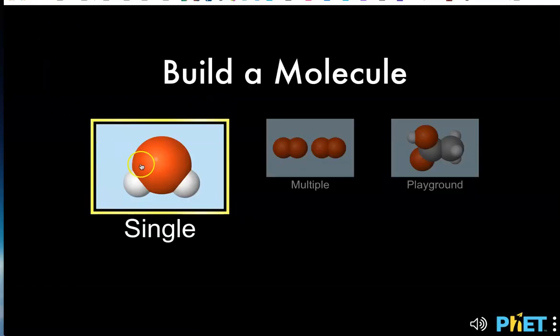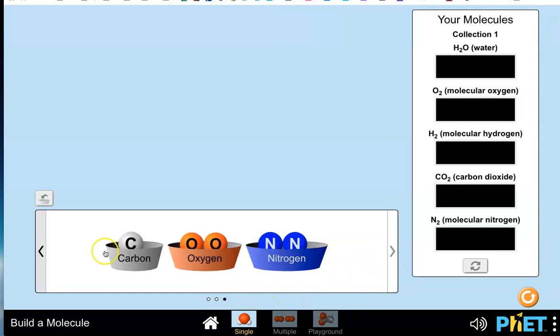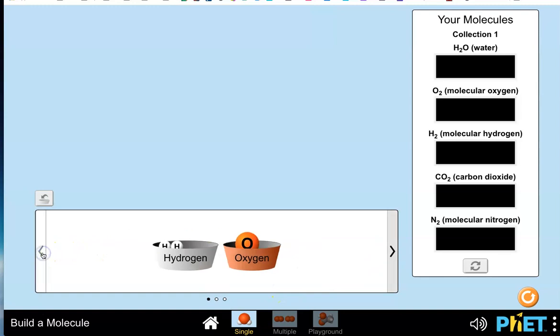Once it loads, you'll see these three options. We're going to stick with a single model. I want to orient you to the drawing a little bit. There are three sets. You can see the three dots here and there are three bins of atoms that you can use to build your molecules out of. So I'm going to start with this.